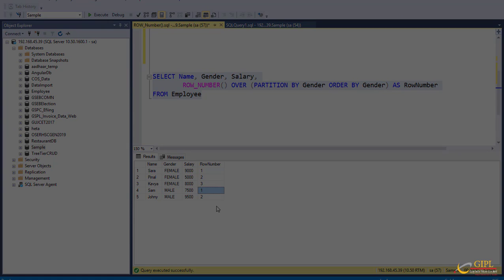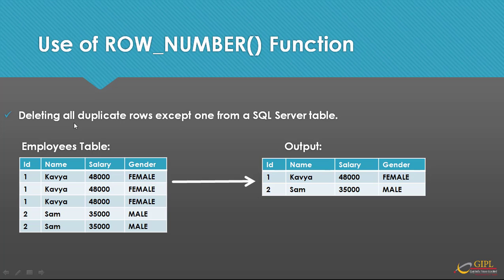Now, what is the use of this function? One of the common uses is deleting all duplicate rows except one from a SQL Server table. If you have a situation where you have a table with lots of duplicate data and you want to delete all those duplicate rows except one, then we can use the ROW_NUMBER function to very easily achieve that. For example, notice that the 'Caveat' record is duplicated 3 times and the 'Sam' record is duplicated 2 times. The delete query we are going to write should delete all duplicate rows except one. After executing the delete query, the employees table should be left with just 2 records: Caveat and Sam.